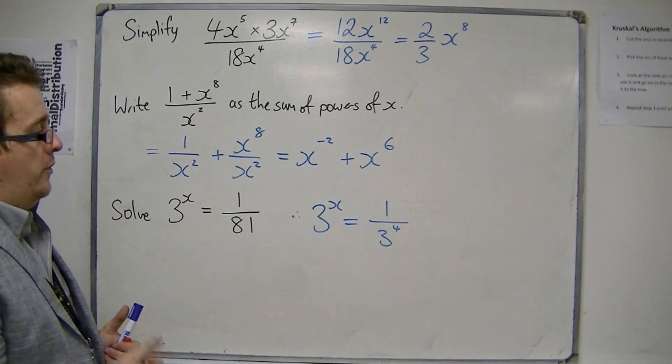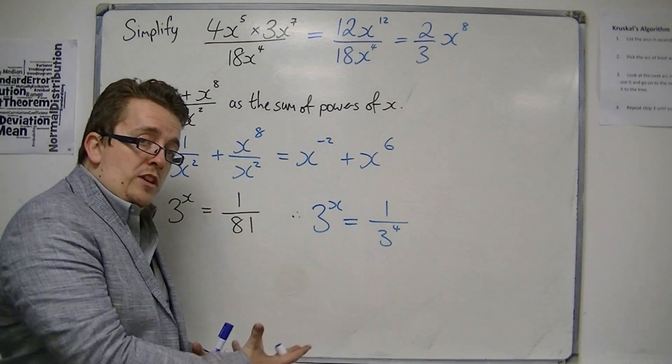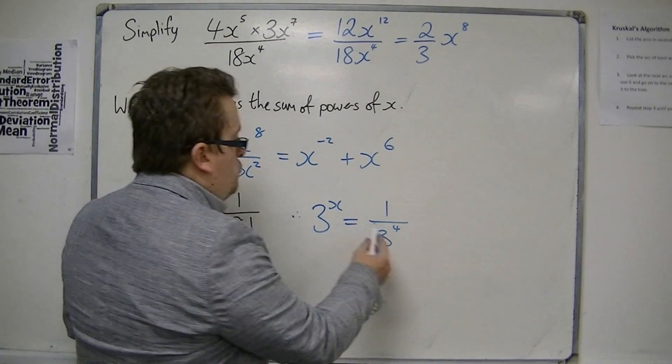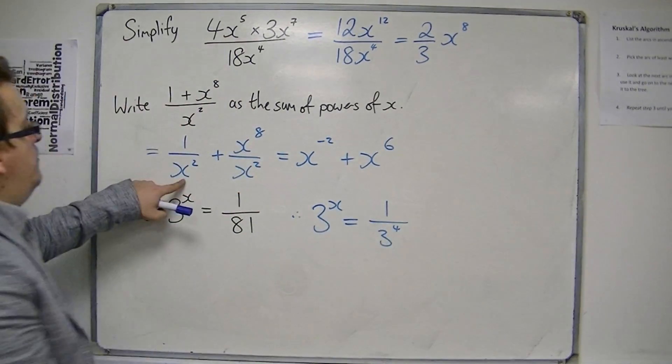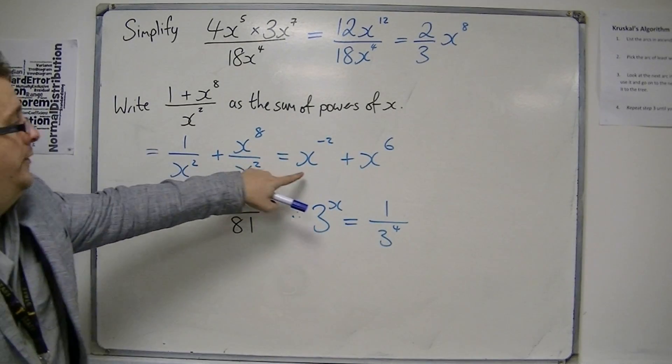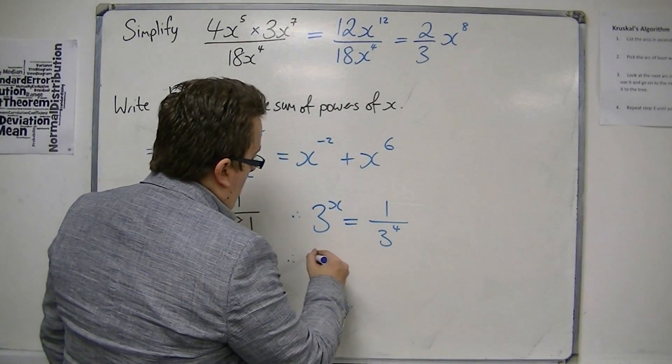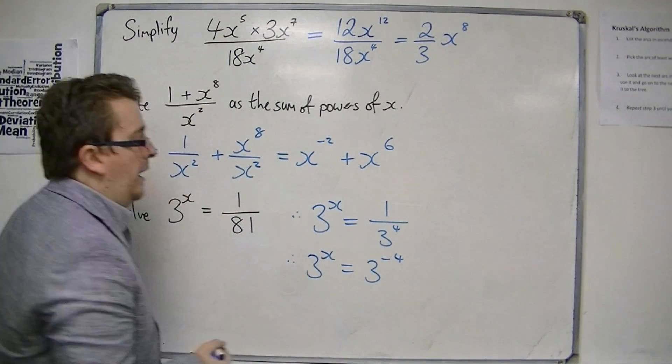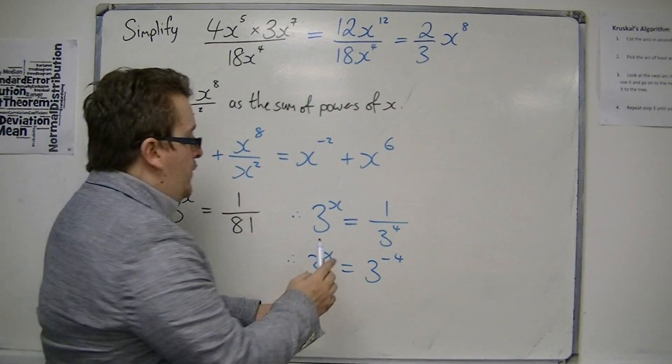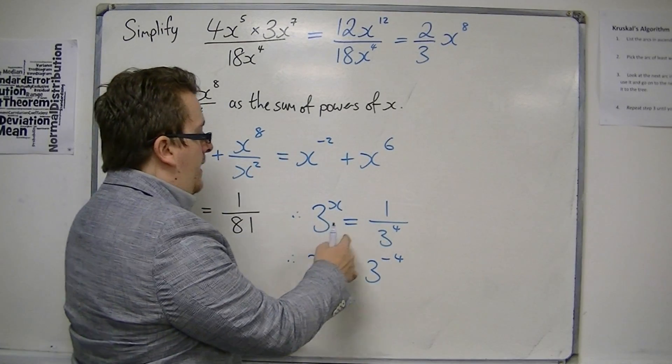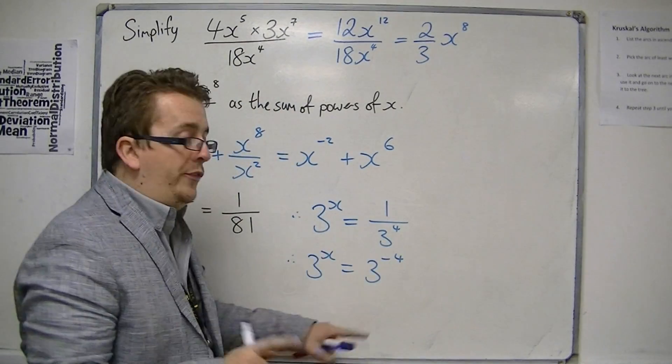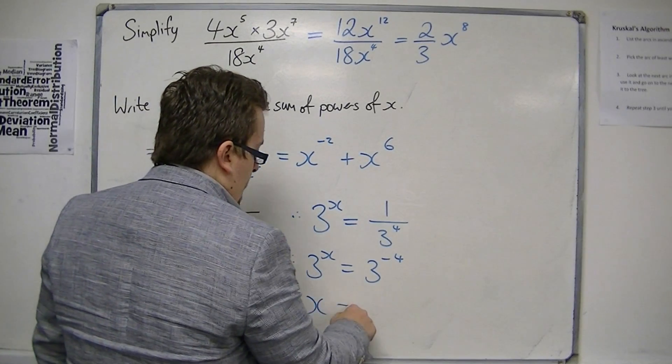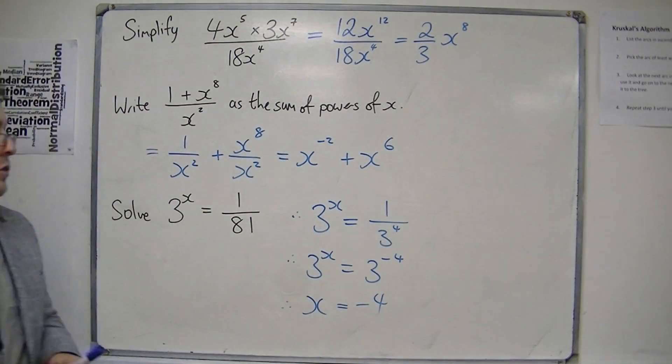So we've got 3 times 3 is 9, times 3 is 27, times 3 is 81. So the right-hand side, like what we wrote 1 over x squared as, can be written as 3 to the minus 4. And so you now know that if you've got 3 to the something is 3 to the something else, then those two somethings must be the same. So x must be minus 4.